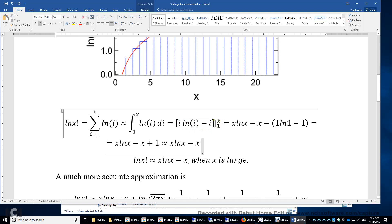All right. And then we plug in the lower limit and the lower limit is 1. The upper limit is x. We plug them in. We get x ln x minus x plus 1. Again, when x is large, this part is much larger than 1. And then we have this approximation.